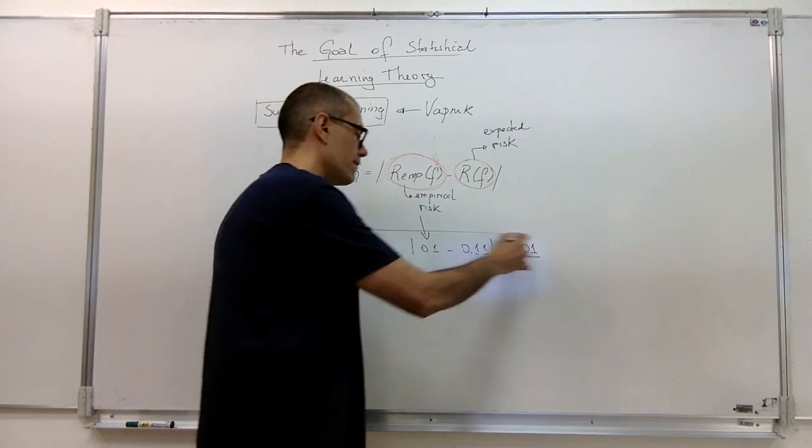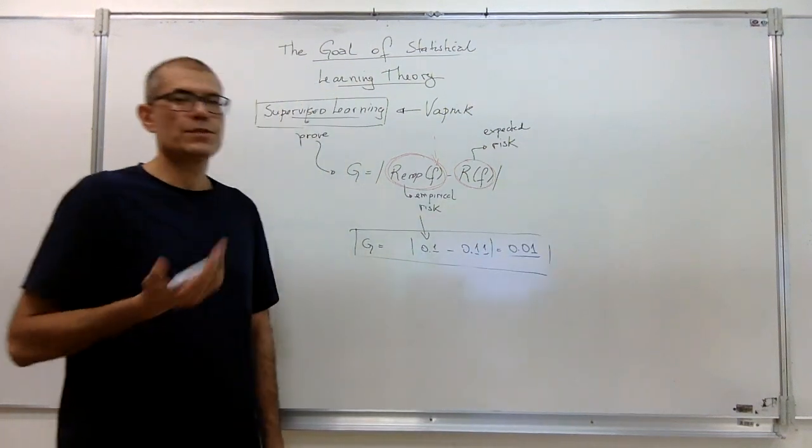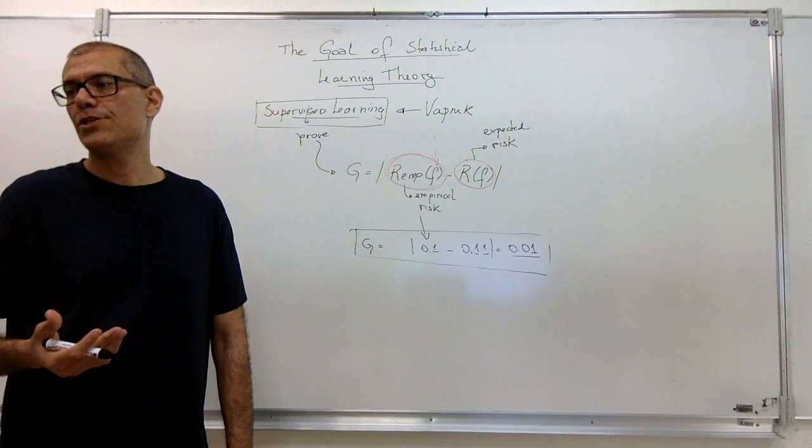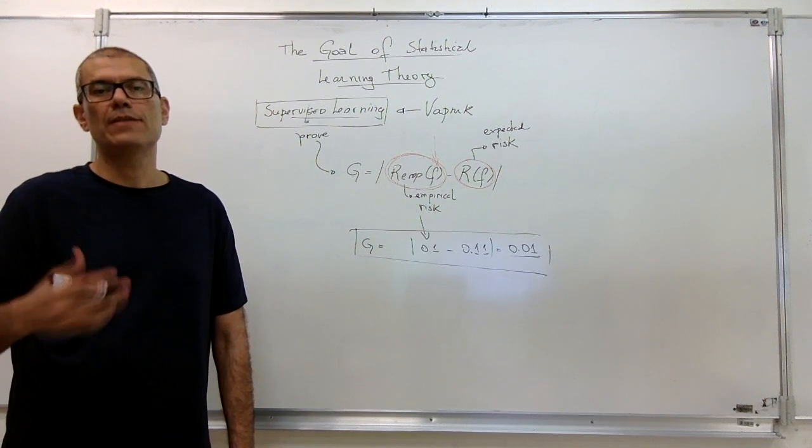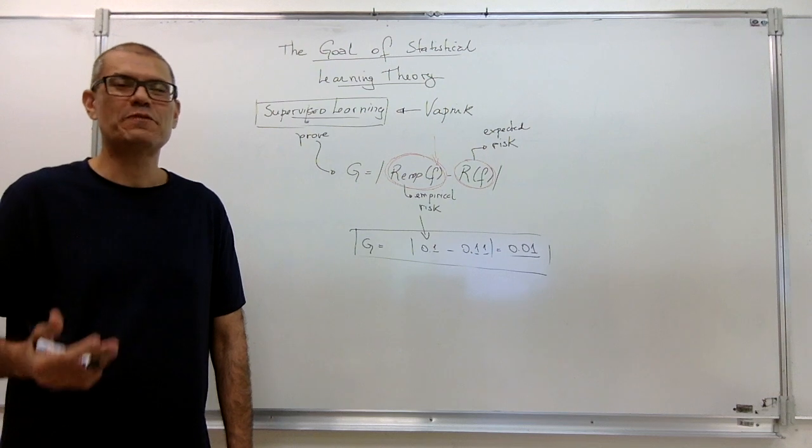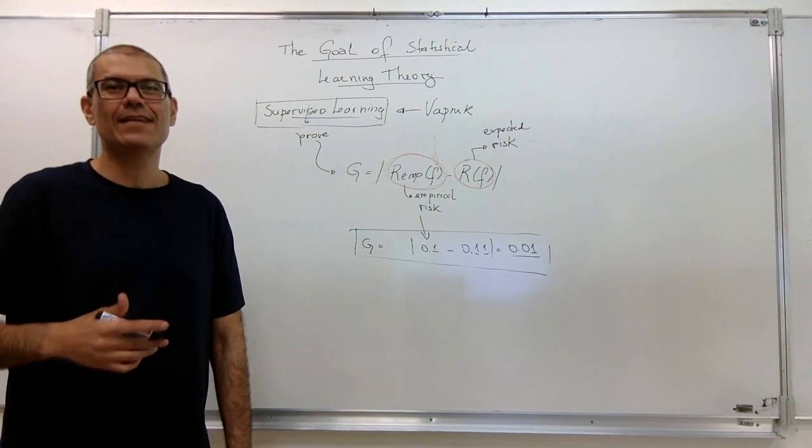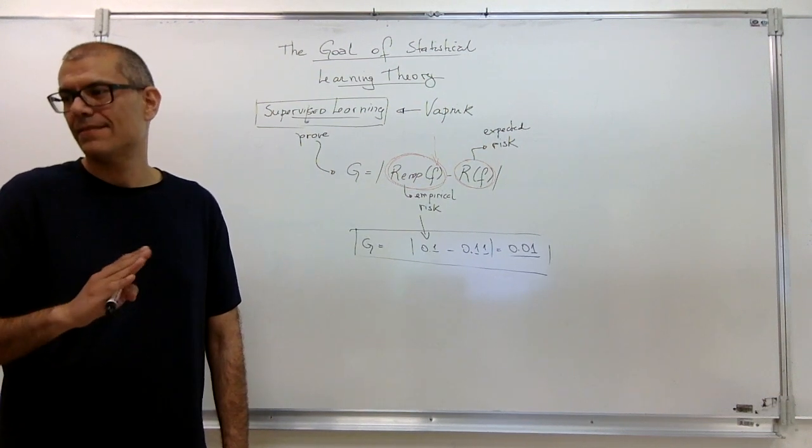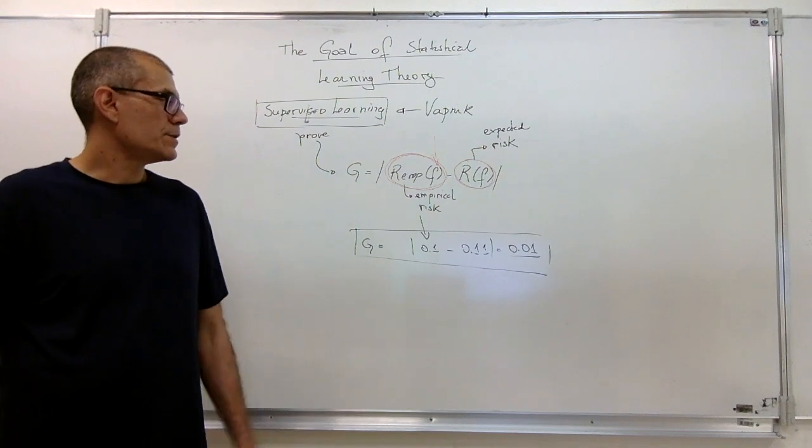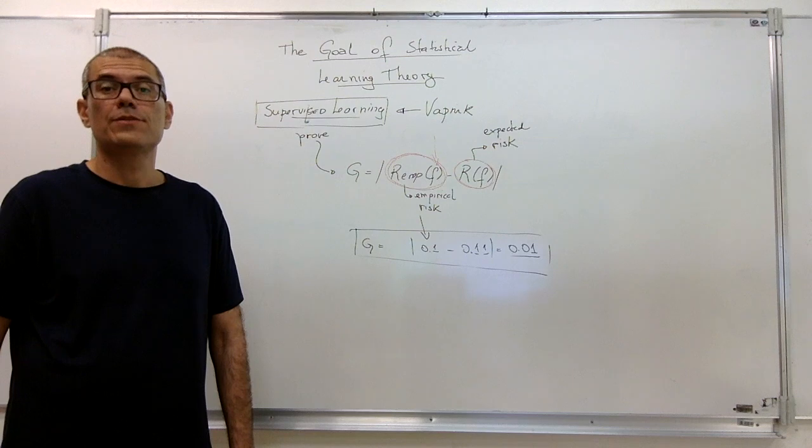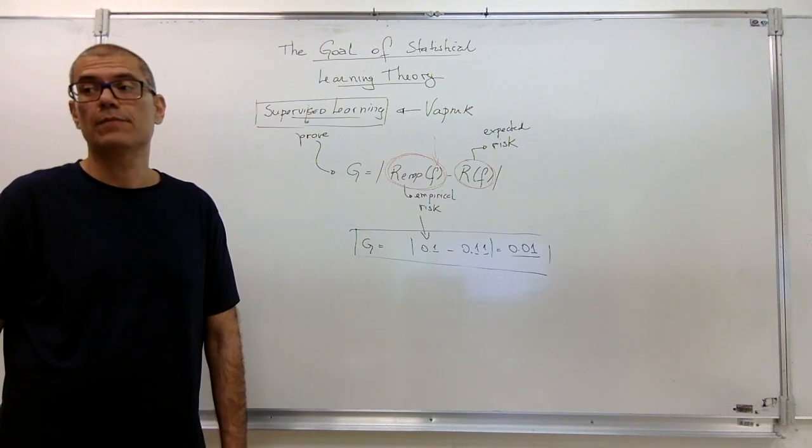So if we don't have this, we cannot ensure learning. And that's the condition that Vapnik defined, like, a long time ago, 1965 to 1999. That was the period of time. And that's how we define learning, basically, in terms of supervised learning, at least.